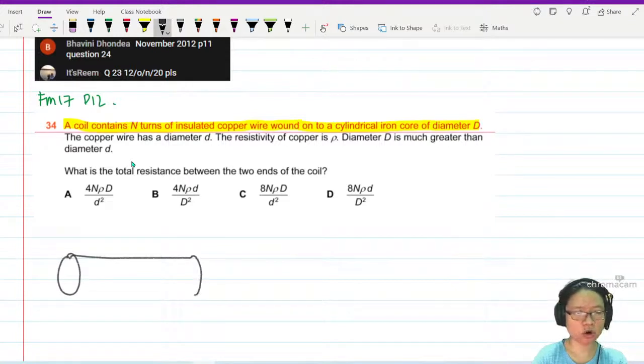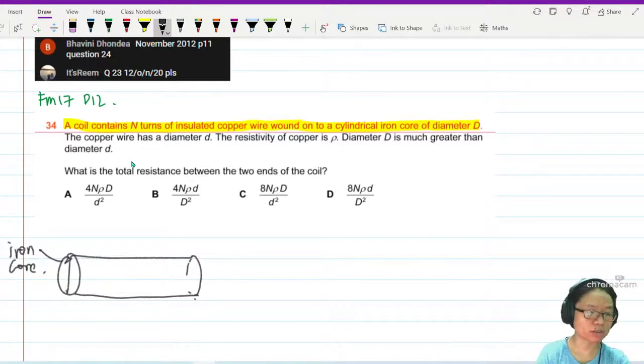Okay, so we have an iron core. This is my cylindrical iron core. Iron core, diameter d. Okay boss, this is d.